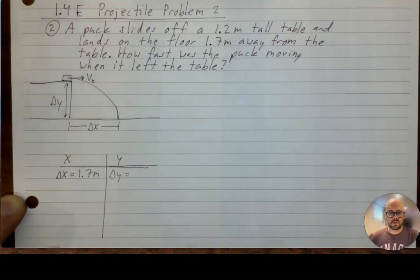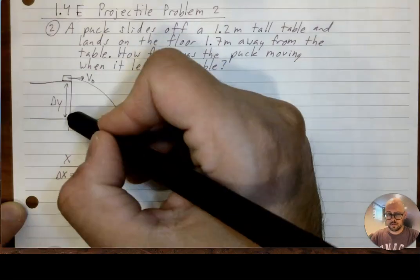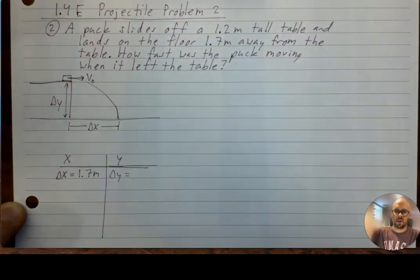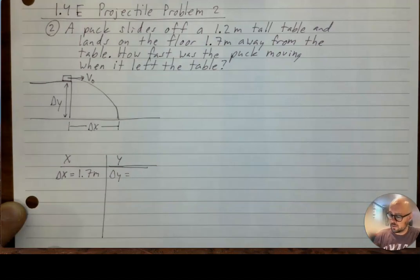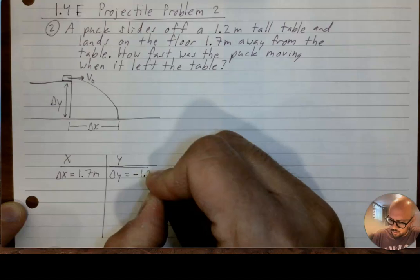It also says that it slides off a table that's 1.2 meters tall. Well, if it goes from the top of the table and lands on the ground, then that means it goes down by 1.2 meters. So delta y is negative 1.2 meters.